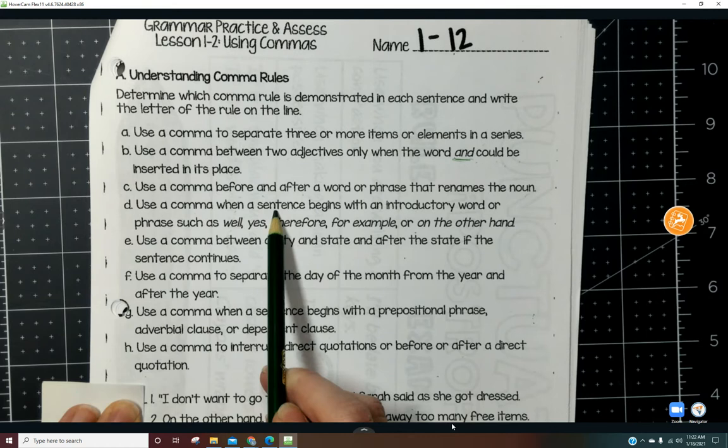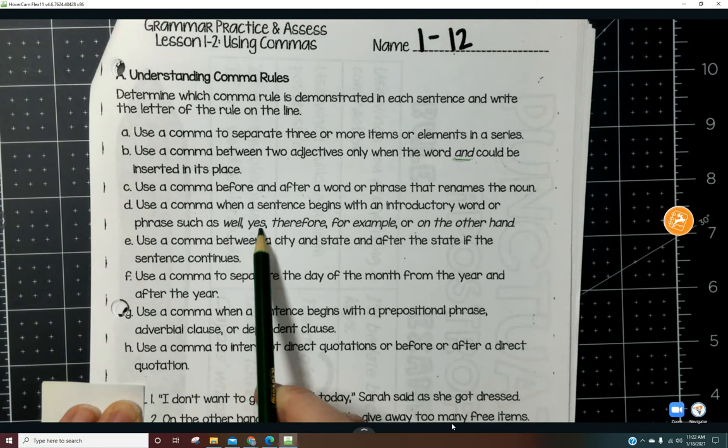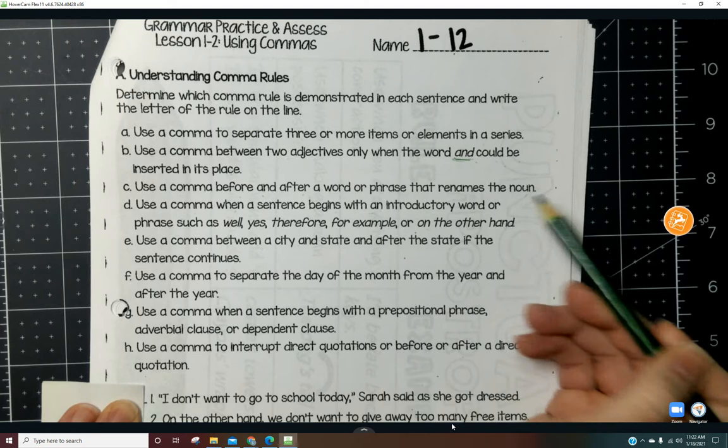Use a comma before and after a word or phrase that renames the noun. Use a comma when a sentence begins with an introductory word or phrase such as well, yes, therefore, for example, or on the other hand - those are our transitions or transitional phrases.